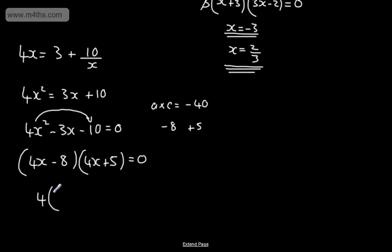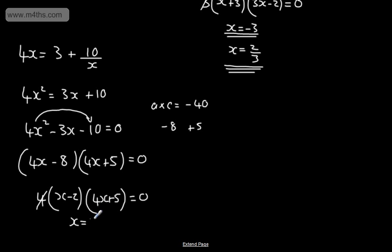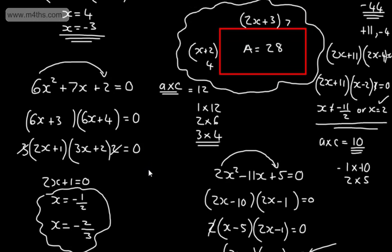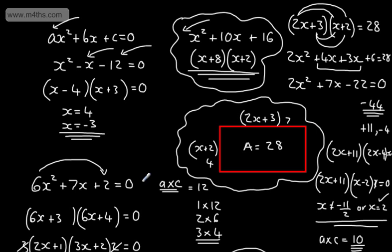We set up 4X in each bracket and insert the values. Taking 4 out of the first bracket gives X minus 2. The second bracket has no common factor, so it stays as 4X plus 5, equal to 0. So X equals 2, or X equals negative 5 over 4. That's factoring and solving quadratic equations when the coefficient of the term in X squared, or the value of A, is not equal to 1. This method is not mathematically rigorous, but it's an easier way to access the topic if you're struggling. Make sure you're comfortable with the difference between factoring an expression and factoring a quadratic equation to solve.